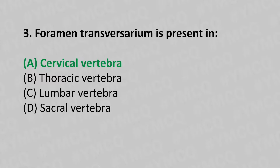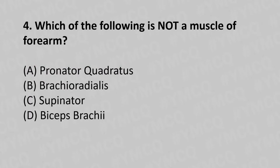Moving to our fourth question. Which of the following is not a muscle of the forearm? Option A, pronator quadratus. Option B, brachioradialis. Option C, supinator. Option D, biceps brachii. And the answer is Option D, biceps brachii.